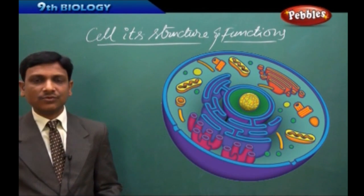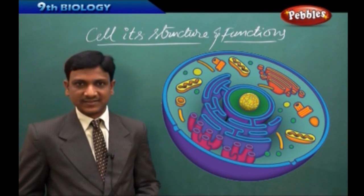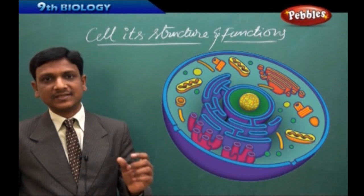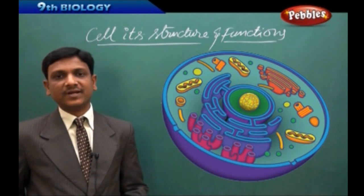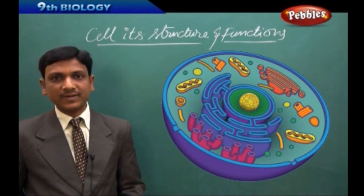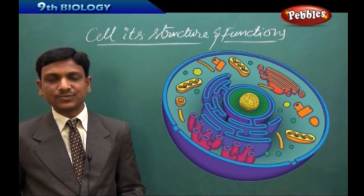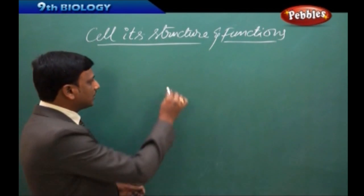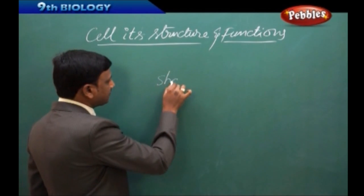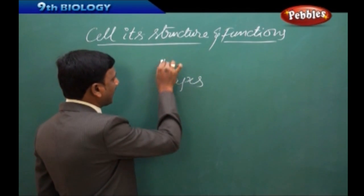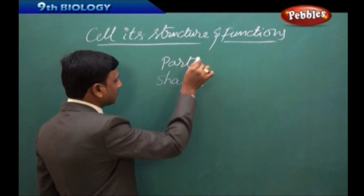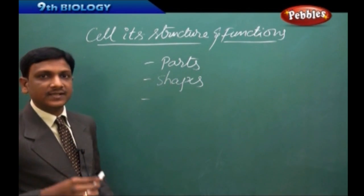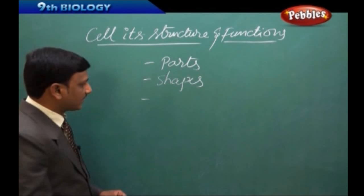You also learned about the shapes of cells. You learned that cells exist in different shapes. Some cells in oval shape, some in round shape, some are cubical, some are cylindrical. So you learned about the shapes of the cell and you learned about parts of the cell and you also learned about the sizes of the cell.